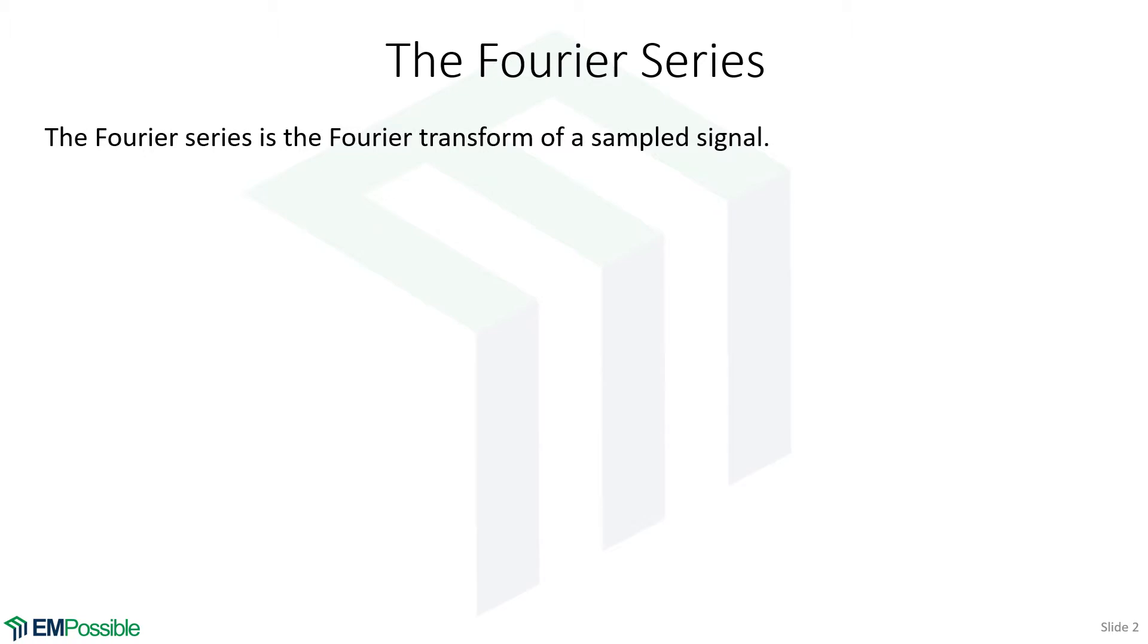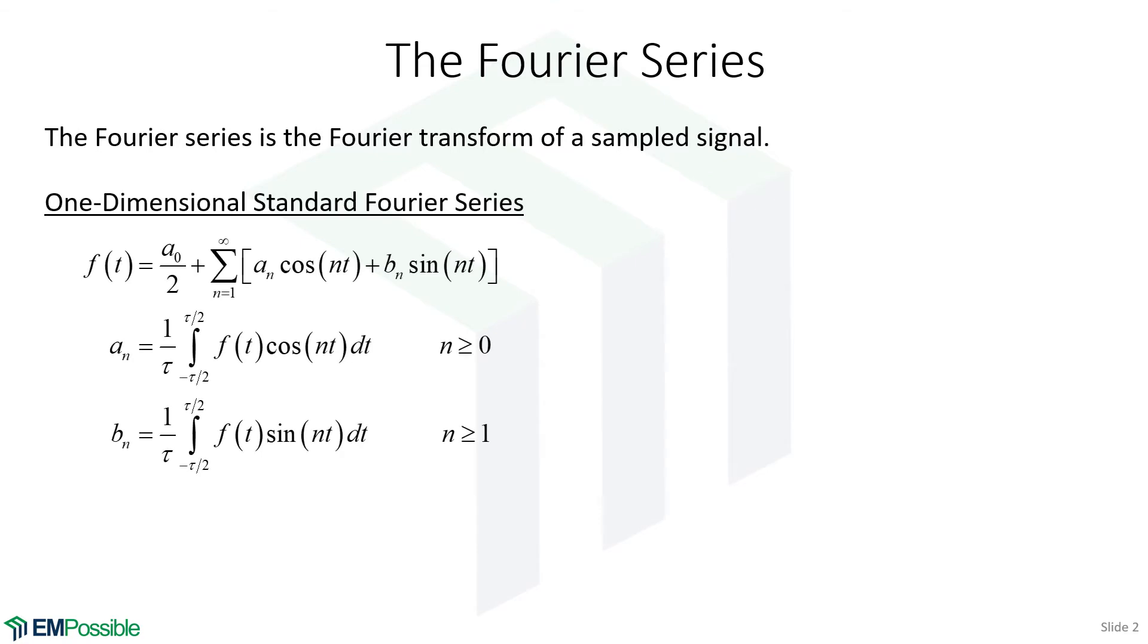Let's remember our definitions of Fourier series. So we have a sampled signal. The Fourier transform becomes discrete and really reduces to a Fourier series. The first one we typically learn in school is the standard Fourier series where we're expanding a function into sines and cosines.